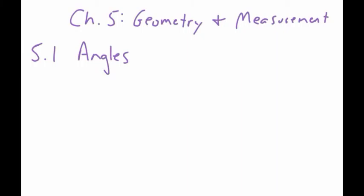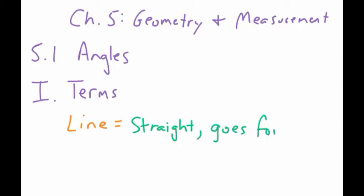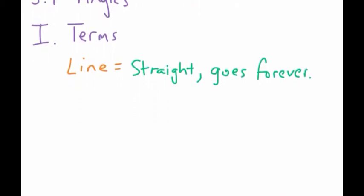I'm going to start out with my Roman numeral one. I wasn't sure what to call it, so I'm going to call it terms. These aren't going to be official definitions, just me kind of saying what makes sense. If you have a line, a line does what? It's straight. If you have an actual line, is it long or is it short? A line should go on forever. So straight, it goes forever.